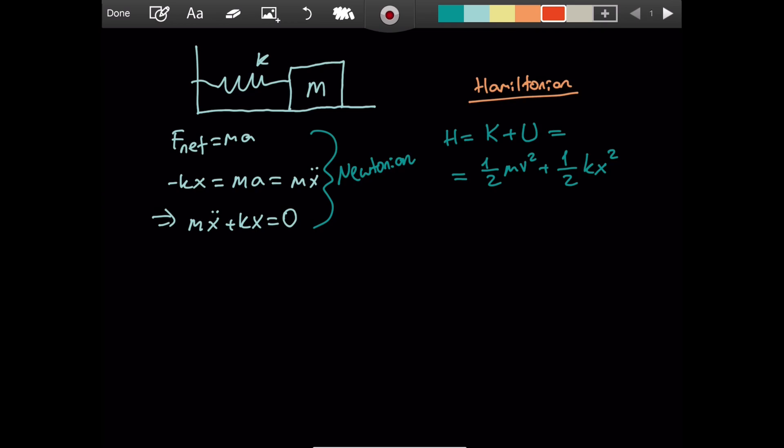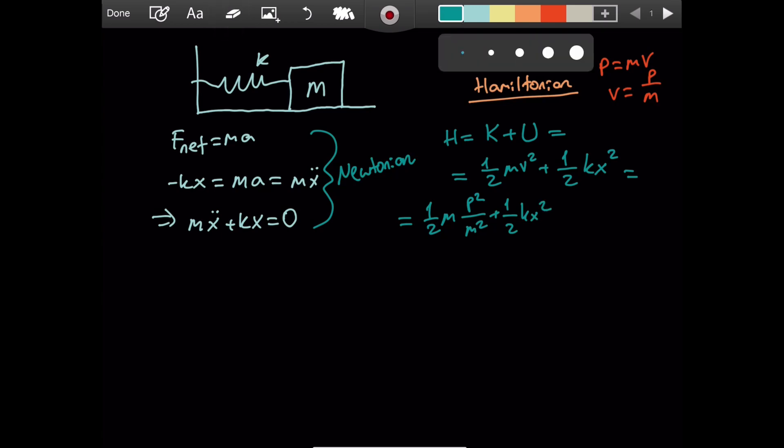For that, I would say p is equal to m times v. So v is equal to p over m, which I substitute here. So I get that one over two m, v squared is going to be p squared over m squared, plus one over two kx squared. So the final expression that we are looking for is p squared over two m plus one over two kx squared.